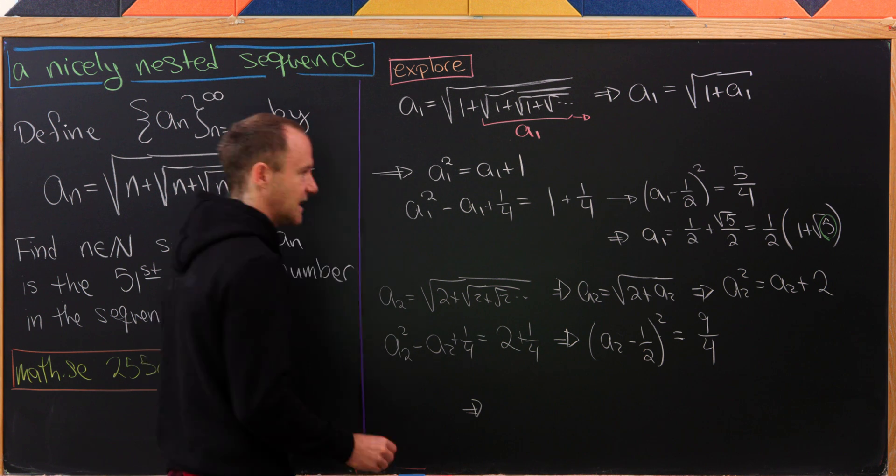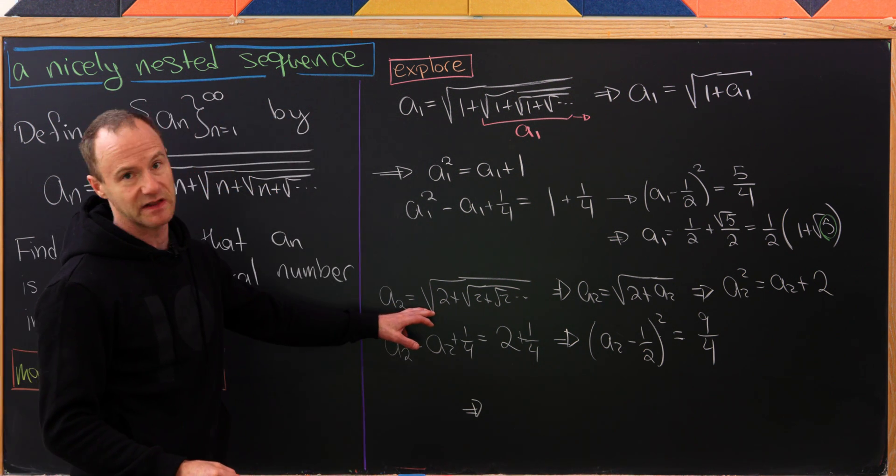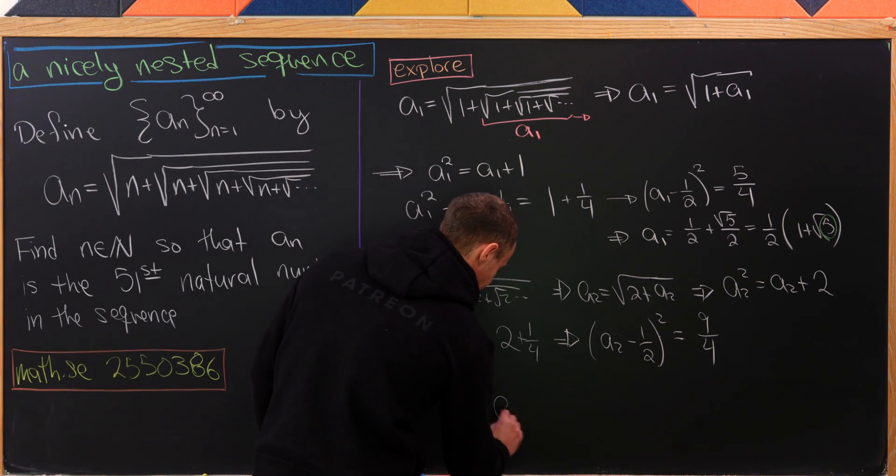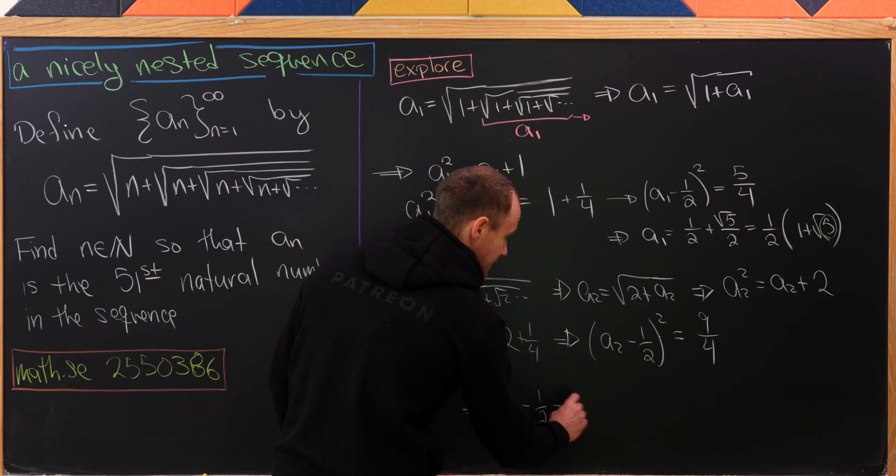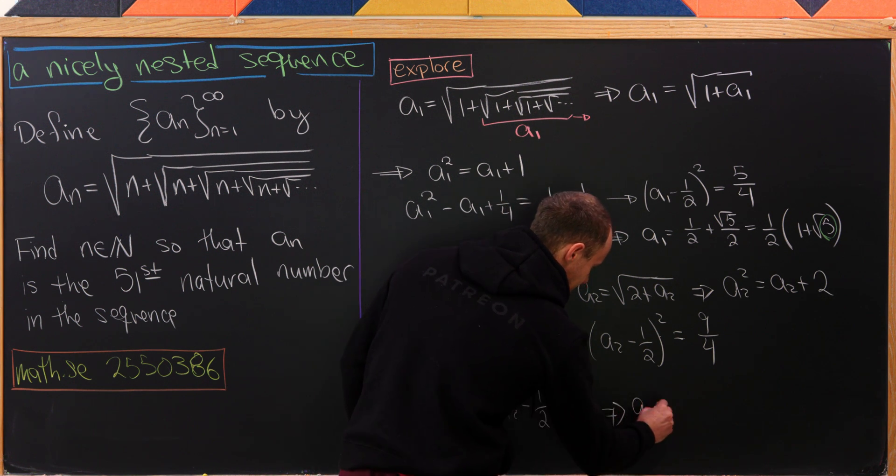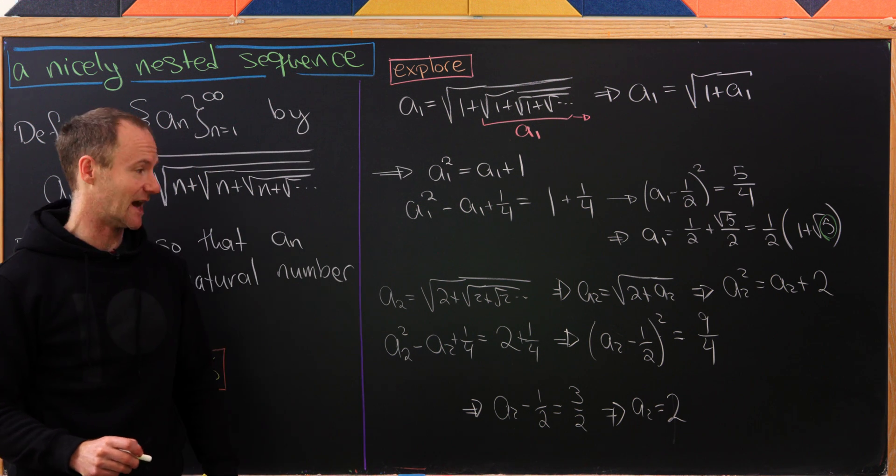Taking the square root of both sides and keeping the positive square root, given that this is a positive number, will leave us with a_2 - 1/2 equals 3/2, which means in the end a_2 equals 2. So that is a natural number.